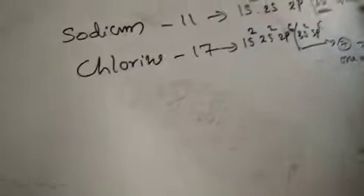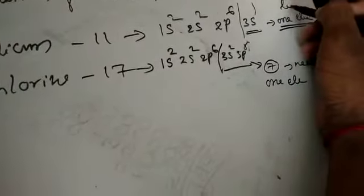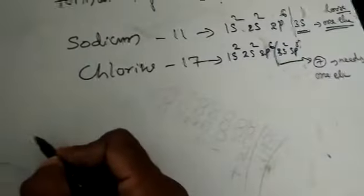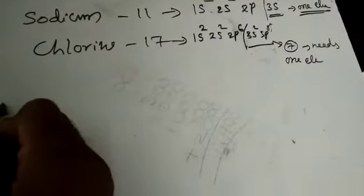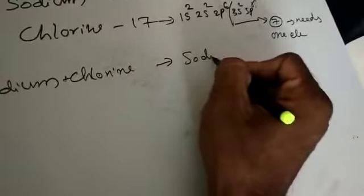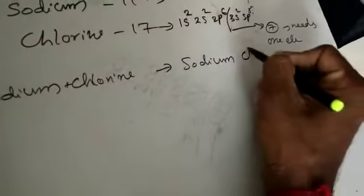Here sodium needs to lose one electron to get stability. So because of this, sodium and chlorine pair together to form sodium chloride. How is sodium chloride formed?